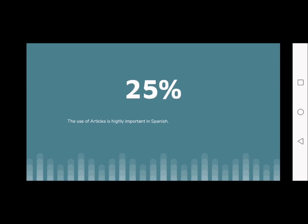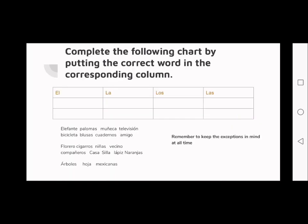As mentioned at the beginning, 25% of the language is made up of articles, so they're very important and we have to learn them.